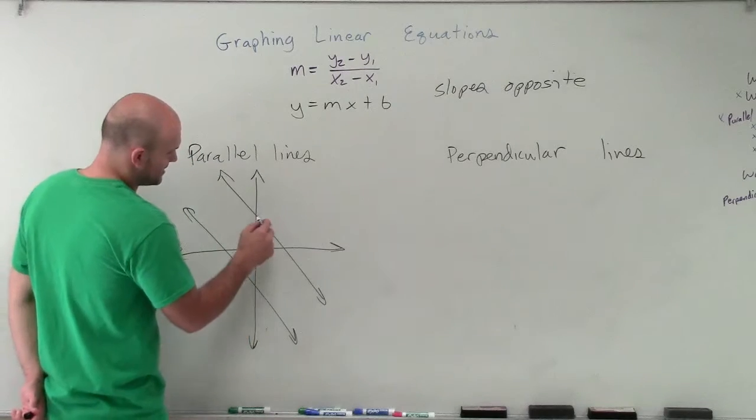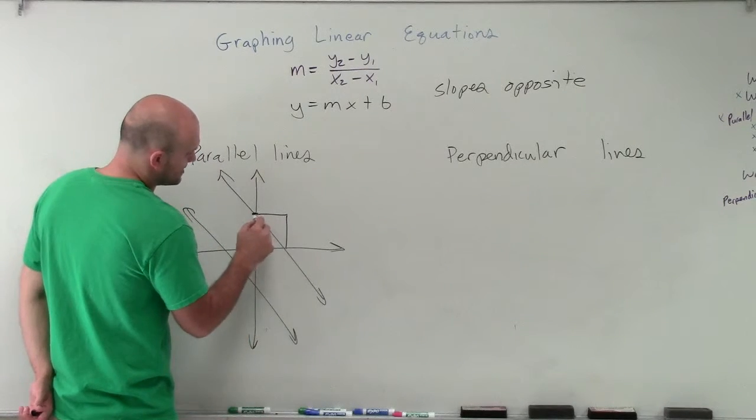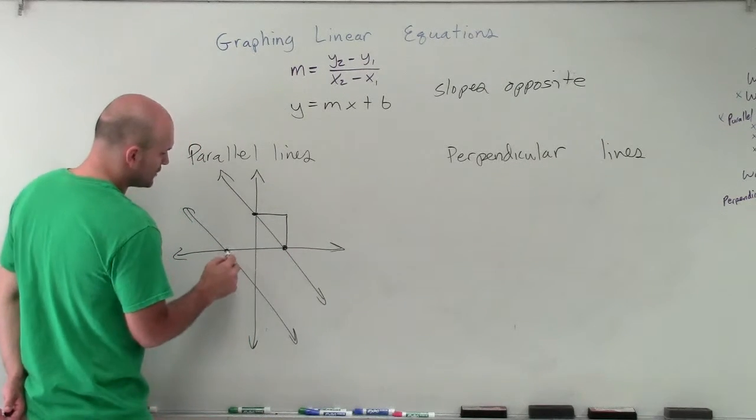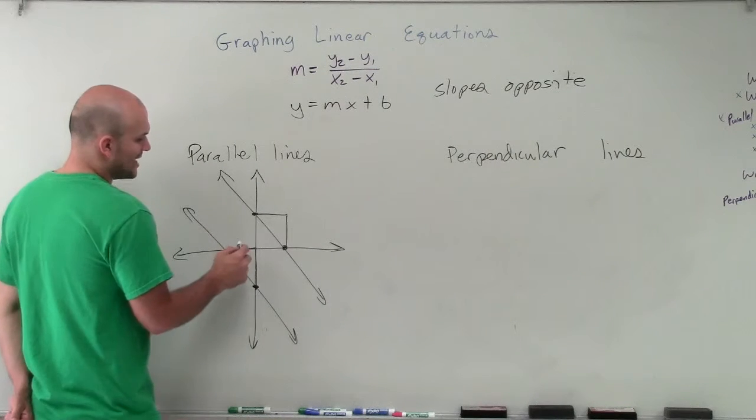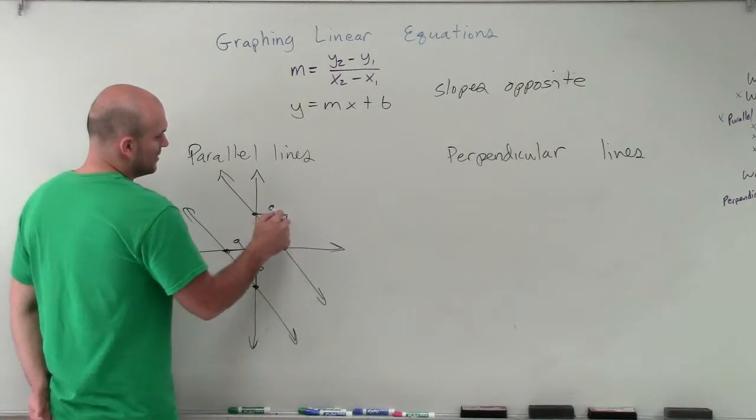Right? And the reason why they do not intersect is because their slopes, the change in y over the change in x for both of them, is always going to be exactly the same constant. Let's call this a over b. Let's call this a over b.